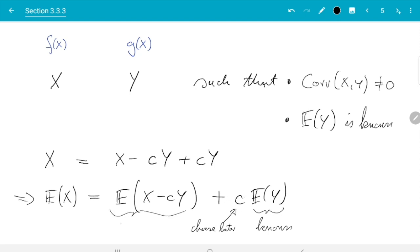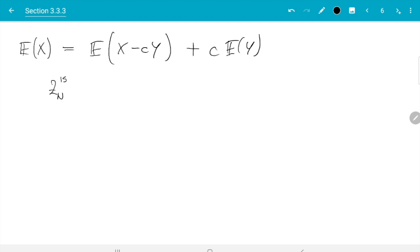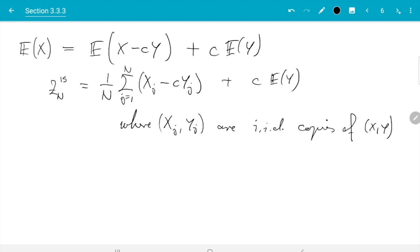And the first term we use Monte Carlo as before. And now what we are going to do is we are going to choose c so that the mean squared error is minimized. So in this case that is 1 over n sum j from 1 to n x_j minus c y_j where x_j and y_j are i.i.d. copies of x and y with the same correlation plus c times expectation y. So I have just written the samples.